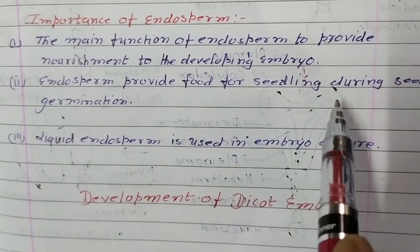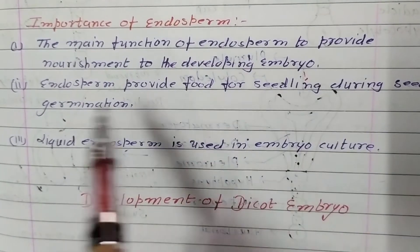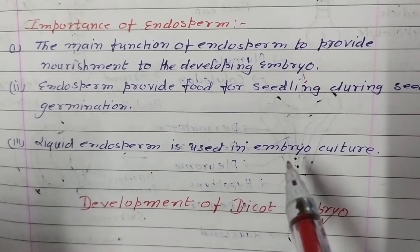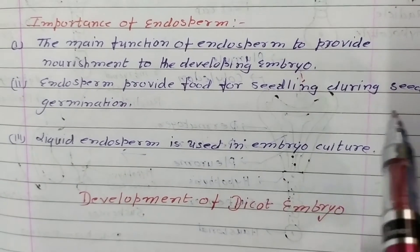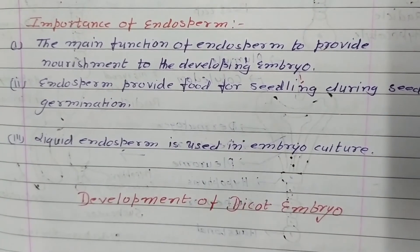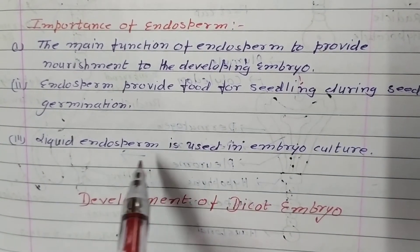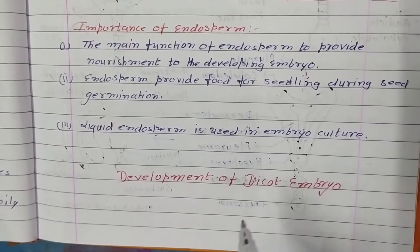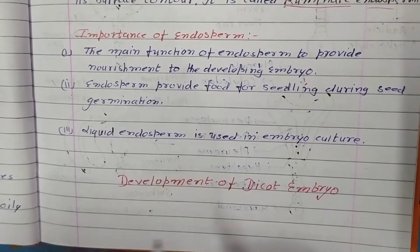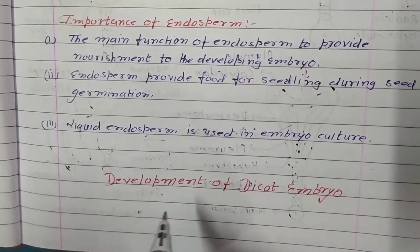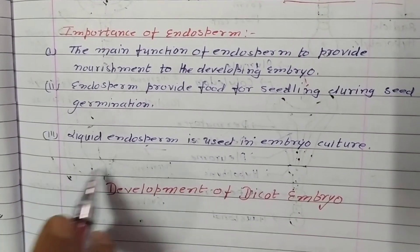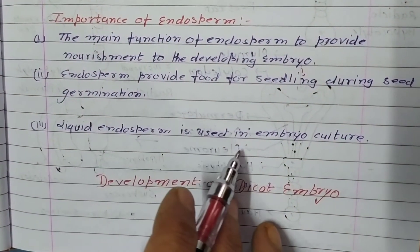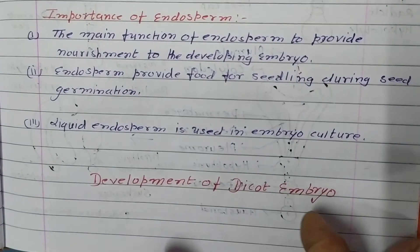The main function of the endosperm is to provide nourishment to the developing embryo. Endosperm also provides food for the seedling during seed germination, and is used in embryo culture techniques.